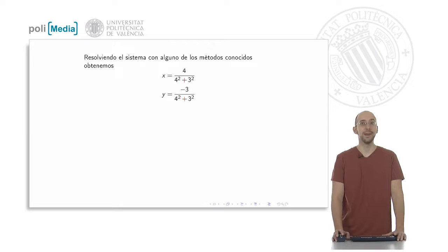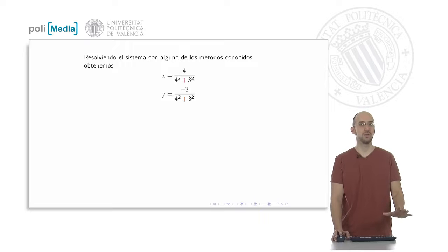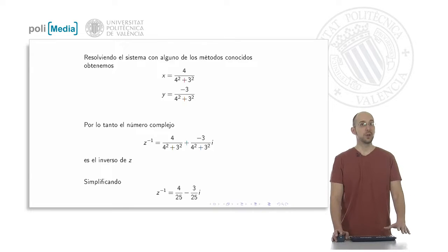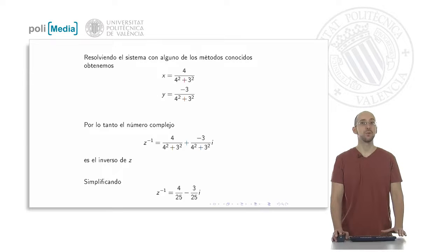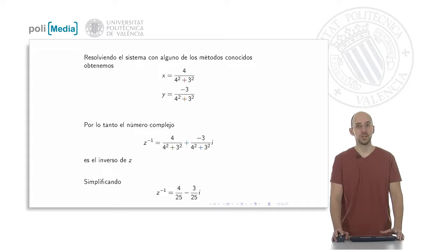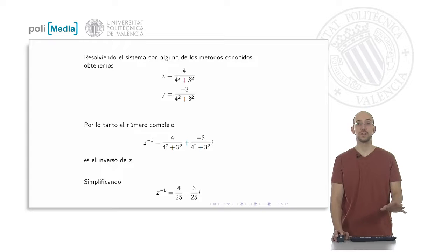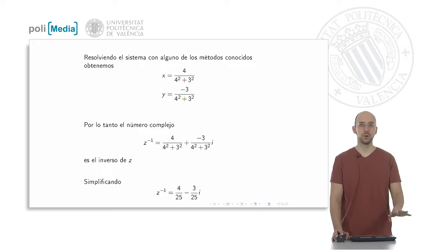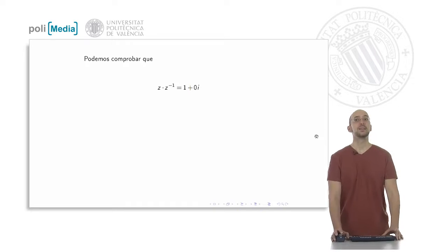Solving the system, we arrive at: x equals four divided by four squared plus three squared, and y equals minus three divided by four squared plus three squared. I haven't simplified yet so you can see the general form. Substituting these into z to the minus one: the inverse of z is four over twenty-five minus three over twenty-five i, since four squared is 16, three squared is 9, and their sum is 25.